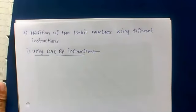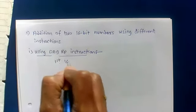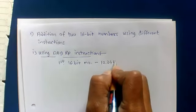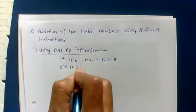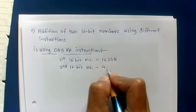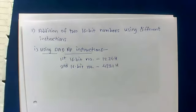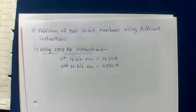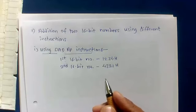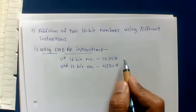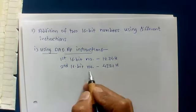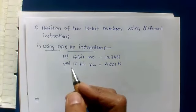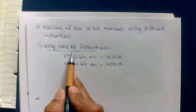Suppose the two 16-bit numbers are: first 16-bit number = 1234H and second 16-bit number = 4321H. To use the DAD RP instruction, it is required to take either the first or second 16-bit number in the HL register pair, because the DAD instruction adds the specified register pair to HL.